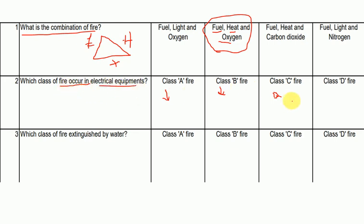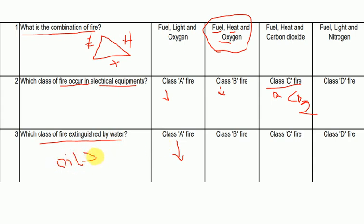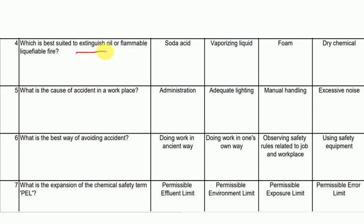Fire occurring in electrical equipment is Class C fire — also called electrical fire. For Class C electrical fire, CO2 extinguisher is used. Water extinguisher is used for general Class A fires. For oil fires, foam extinguisher is used. For electrical fires, CO2 is used, and dry chemical (ABC powder) can also be used.